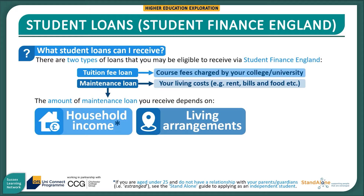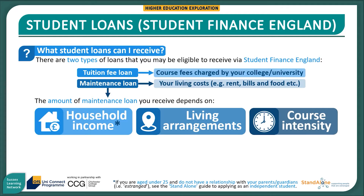Second, in order to assess the amount of maintenance loan you are eligible to receive, your living arrangements while studying are taken into consideration. For example, if you stay living at home during your studies, you will receive less than if you move away. Lastly, your course intensity also determines the amount of maintenance loan you receive.